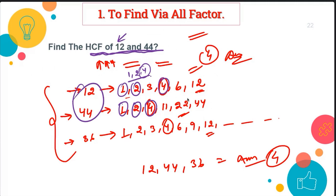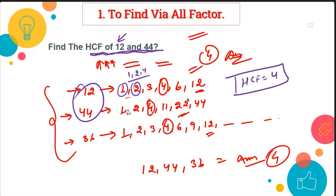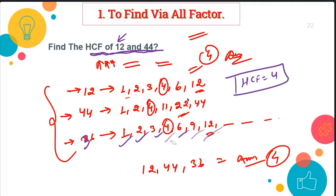The maximum common value is 4. So the HCF of 12 and 44 is 4. If we also include 36, its factors are 1, 2, 3, 4, 6, 9, 12, and more. Even then, 4 is the only number common to all three — 12, 44, and 36 — so the HCF remains 4.